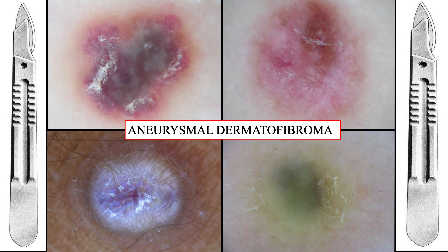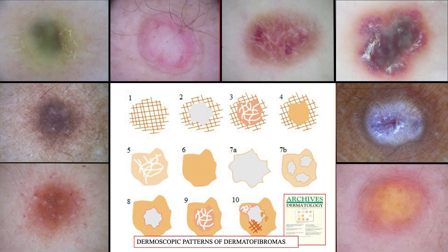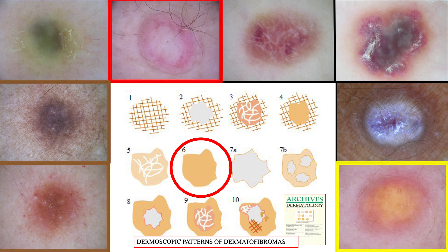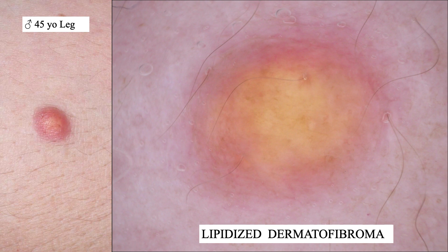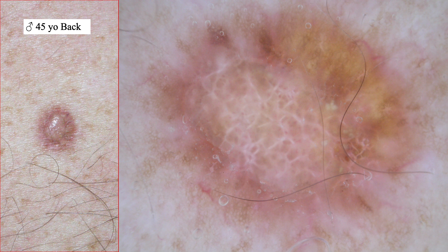It's important to know that some aneurysmal dermatofibromas can show a total homogenous area with different colors — reds, violets, blues — and even a rainbow appearance without peripheral reticulation. Not only aneurysmal dermatofibromas can display a homogenous or structureless area occupying the whole lesion. We can see a total brownish structureless area in some dermatofibromas, a total pinkish structureless area in others, and a yellowish structureless area in lipidized dermatofibromas.